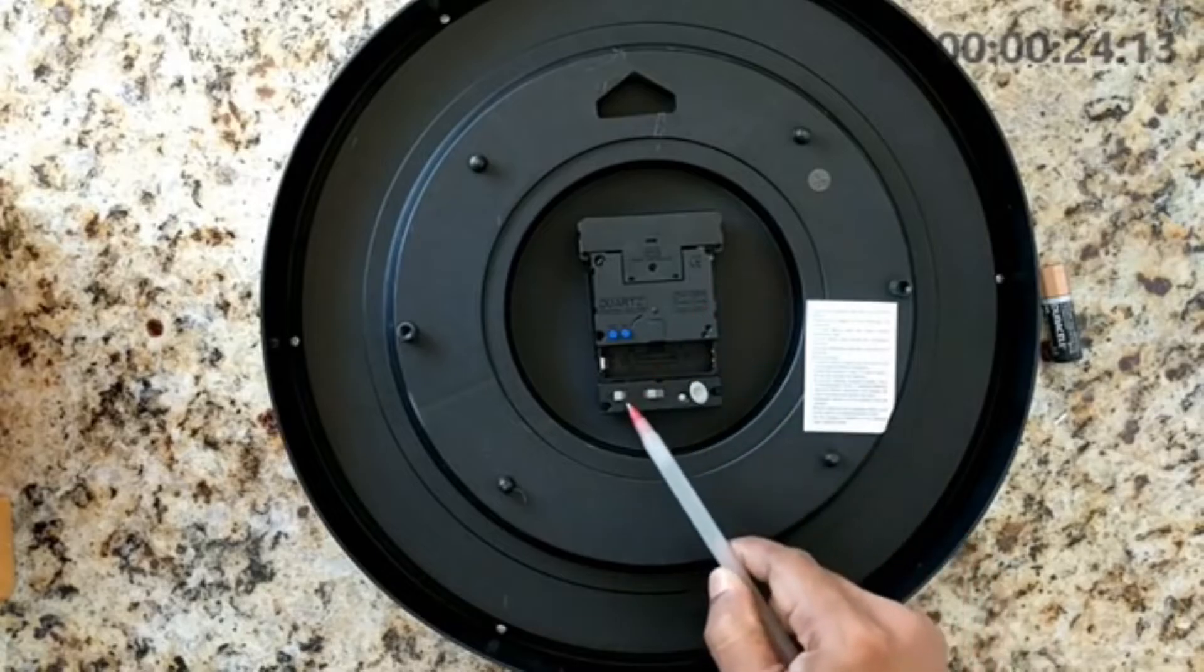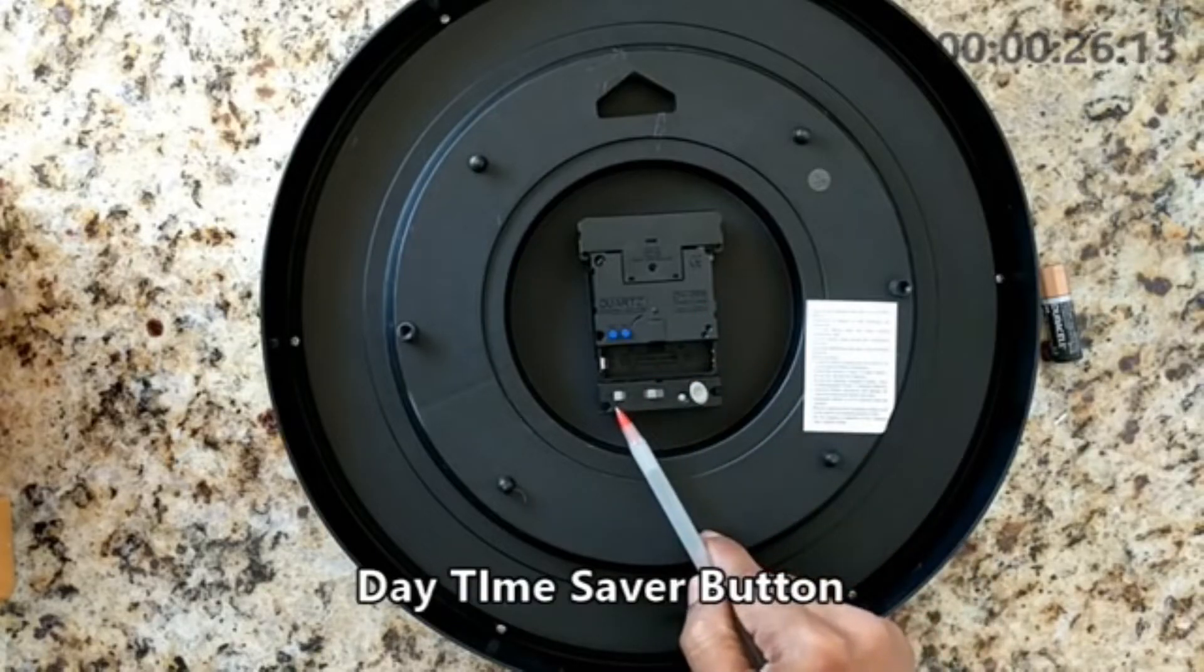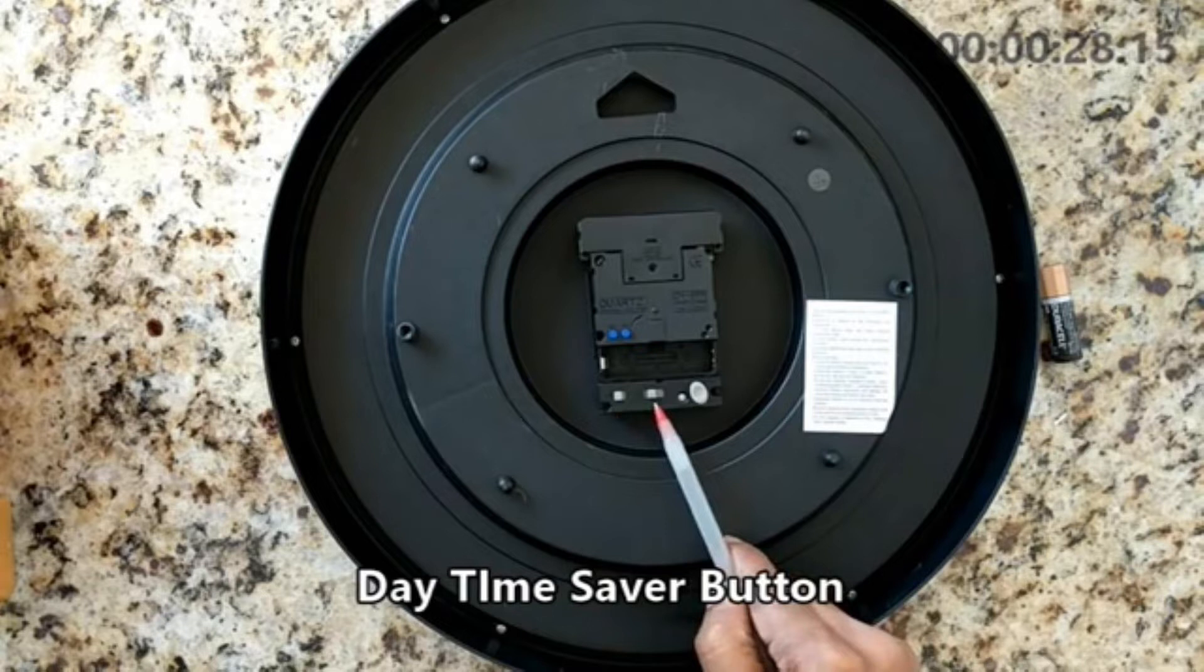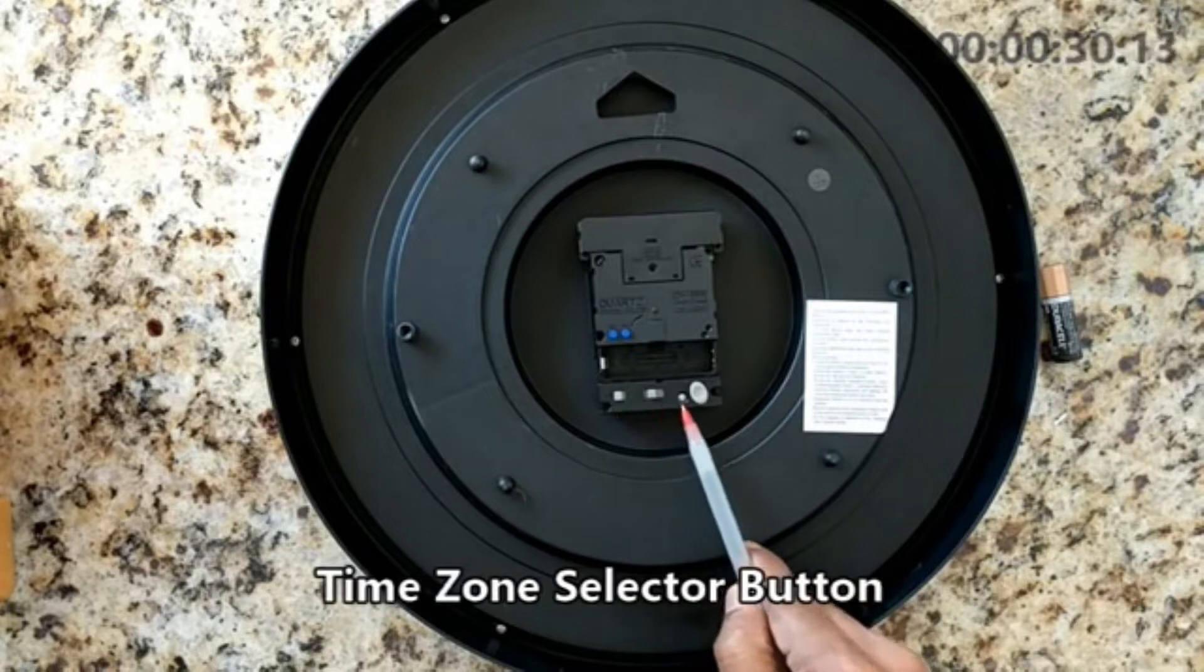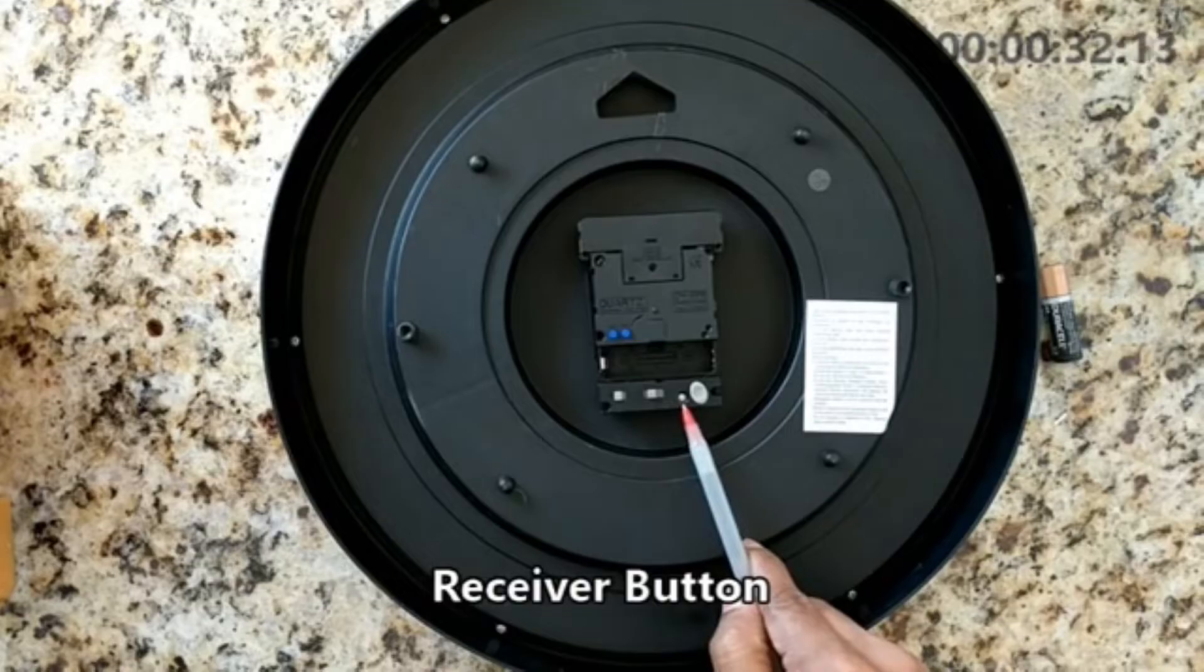This is the daylight saving time button. If you live in a state like Arizona, you can turn it off. This is the time zone select button. Next one is the receiver button, which activates the receiving radio signals to your atomic clock.